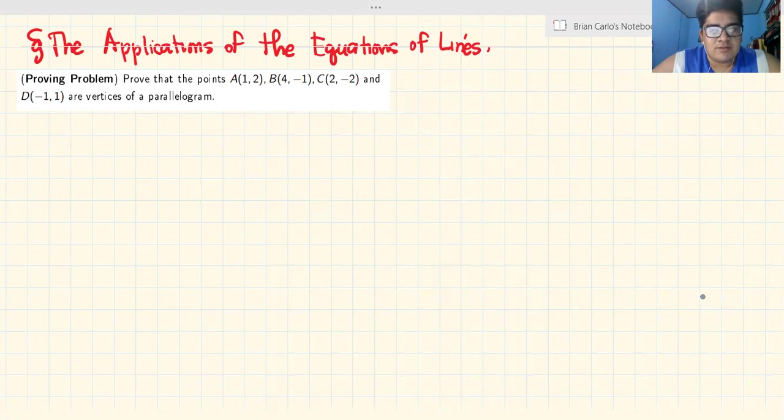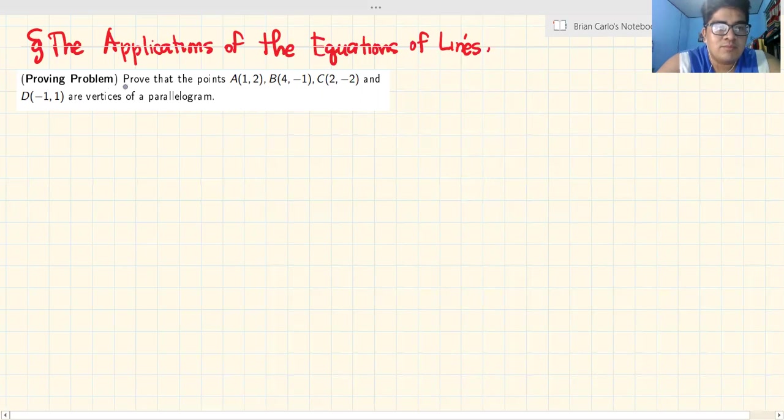As a culminating activity, let's answer this problem. This is a proving problem. Prove that the points A(1,2), B(4,-1), C(2,-2), and D(-1,1) are vertices of a parallelogram.